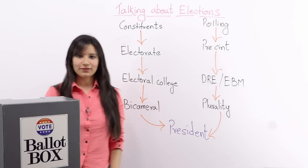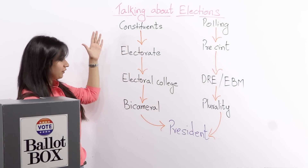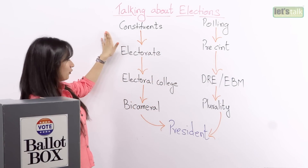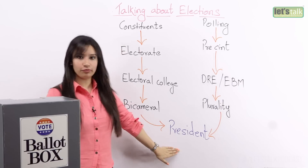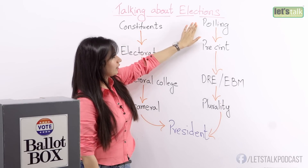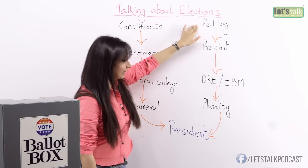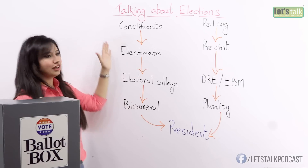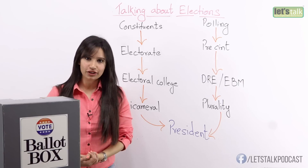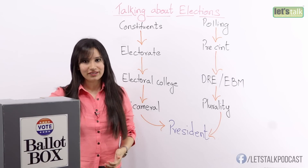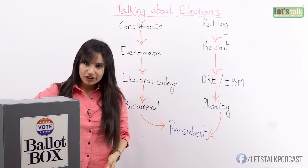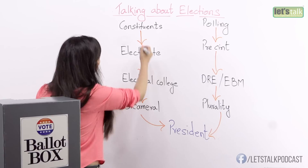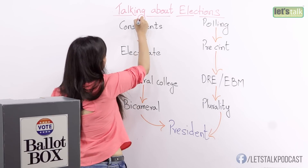So here we have some words on the board. As you can see it's a flowchart which starts from constituents and leads to the president, and we also have another word called polling which leads to president. Let's start with the first word: constituents. That's how we pronounce this word — constituents, not constituents. The stress is on the part: constituents.